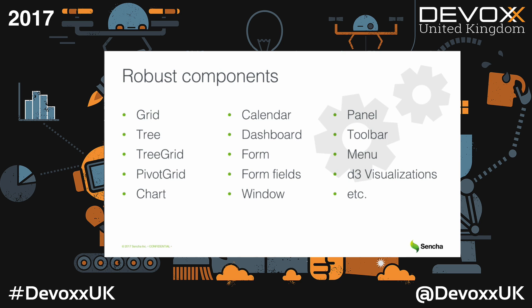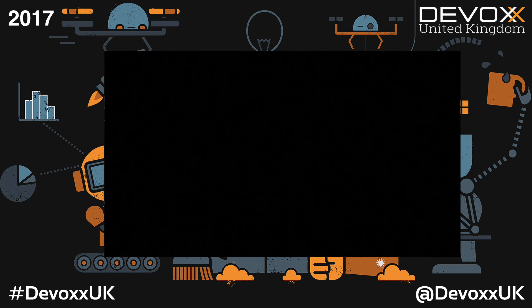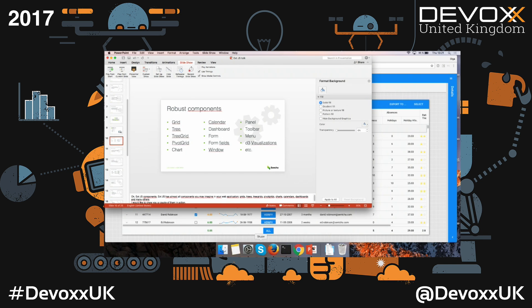The biggest advantage of Ext.js is its robust components. It has almost everything you may imagine: grids, trees, tree grids, pivot grids, charts, calendars, dashboards, and all other components. I would like to show you just a couple of examples in real time.